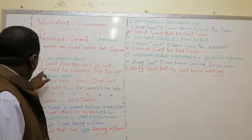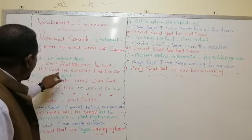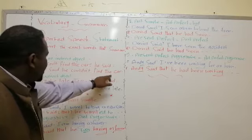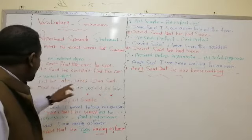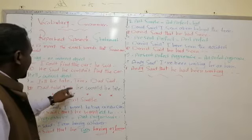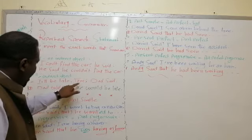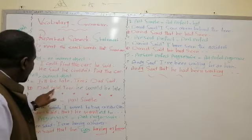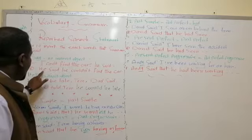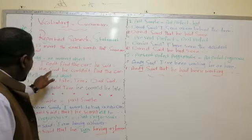So here, in the first case, we say: he couldn't find the cup. We use 'said' here. But where there is a direct object — where someone is told — we use 'told'. Because we have a direct object here, we say 'told'. We don't say 'he said' in that case.